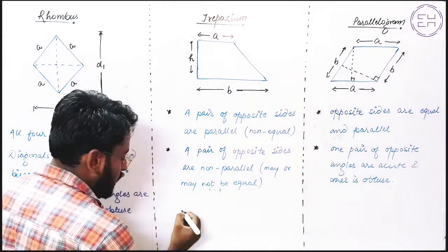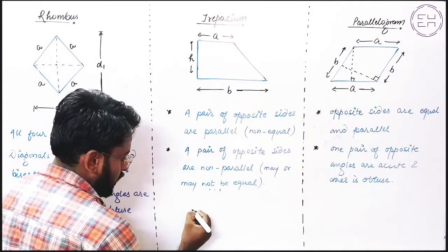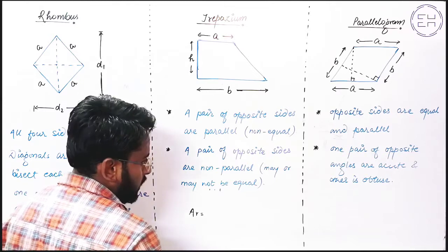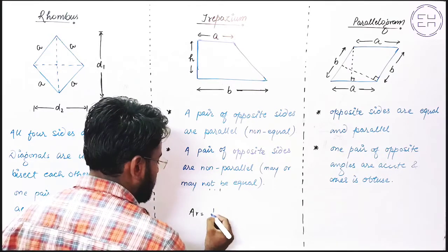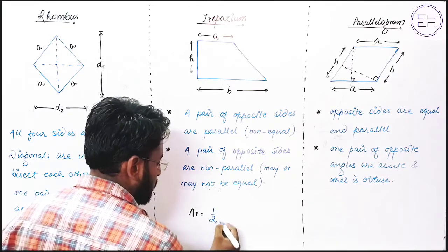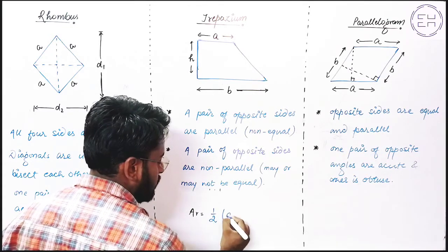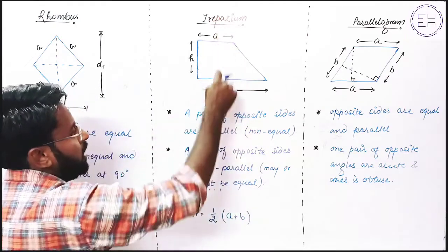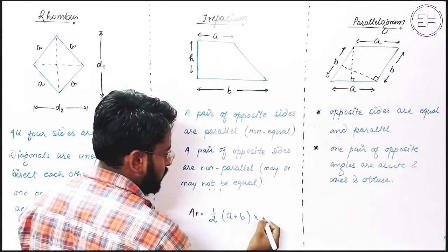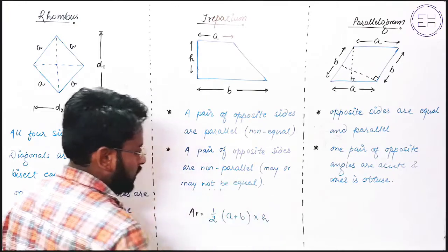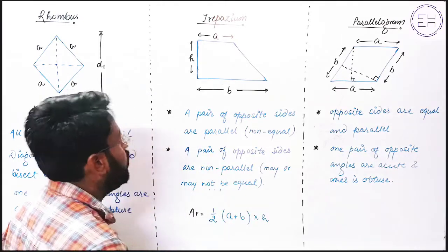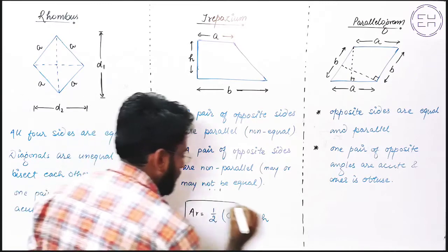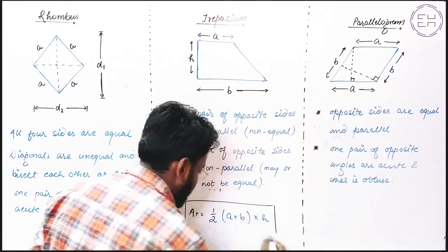Now let us talk about the area of Trapezium. The formula for area is: half × sum of parallel sides × height. The parallel sides are a and b, so Area = ½ × (a + b) × height. This is the formula for the area of a Trapezium.